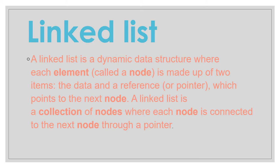A linked list is a dynamic data structure where each element, called a node, is made up of two items: the data and a reference or pointer which points to the next node. A linked list is a collection of nodes where each node is connected to the next node through a pointer.